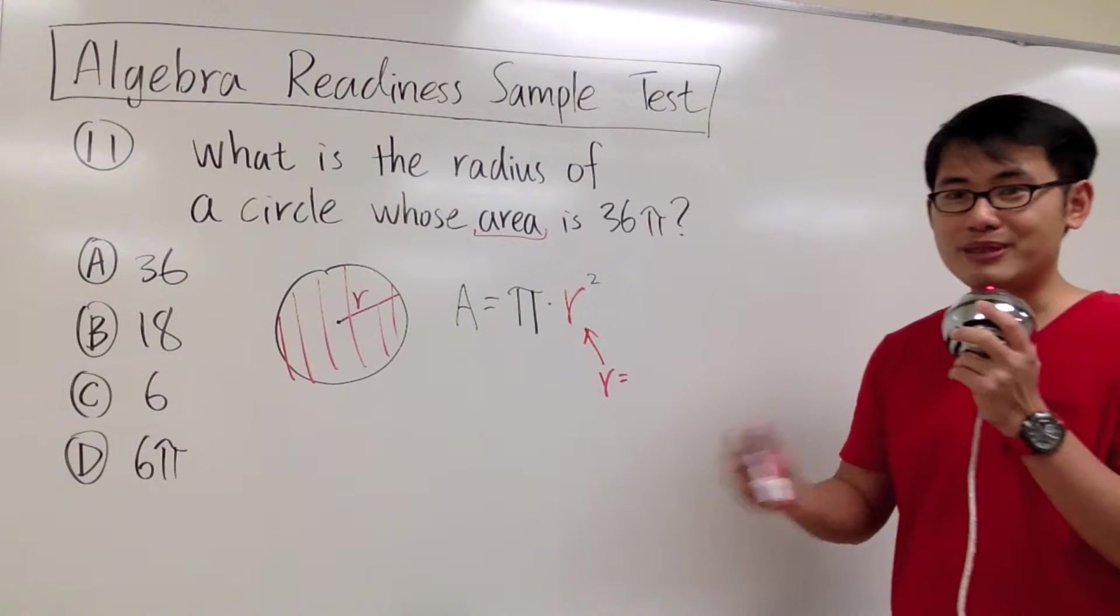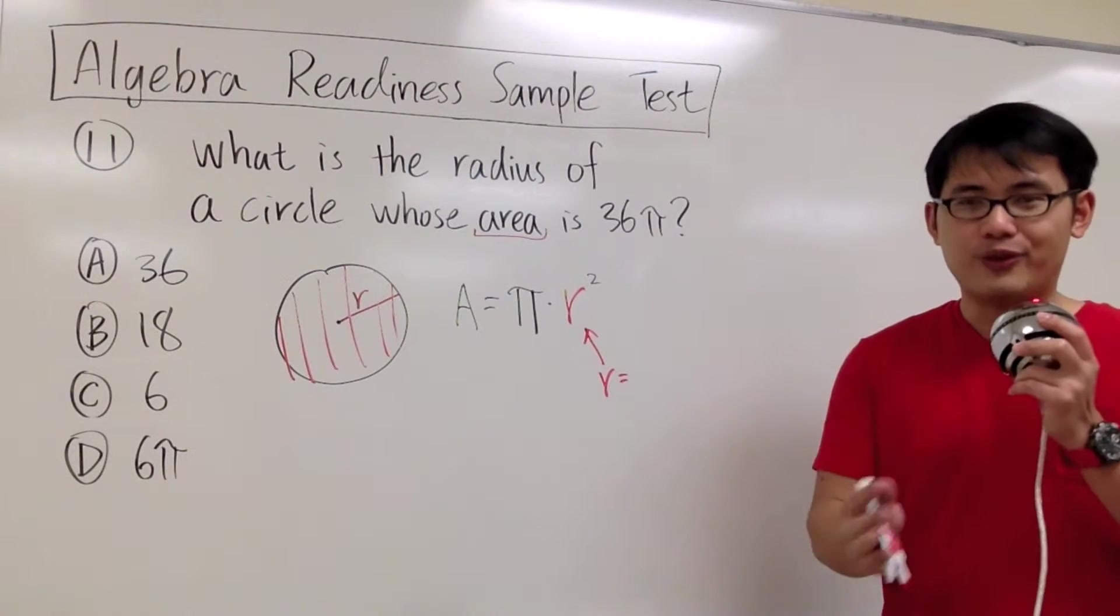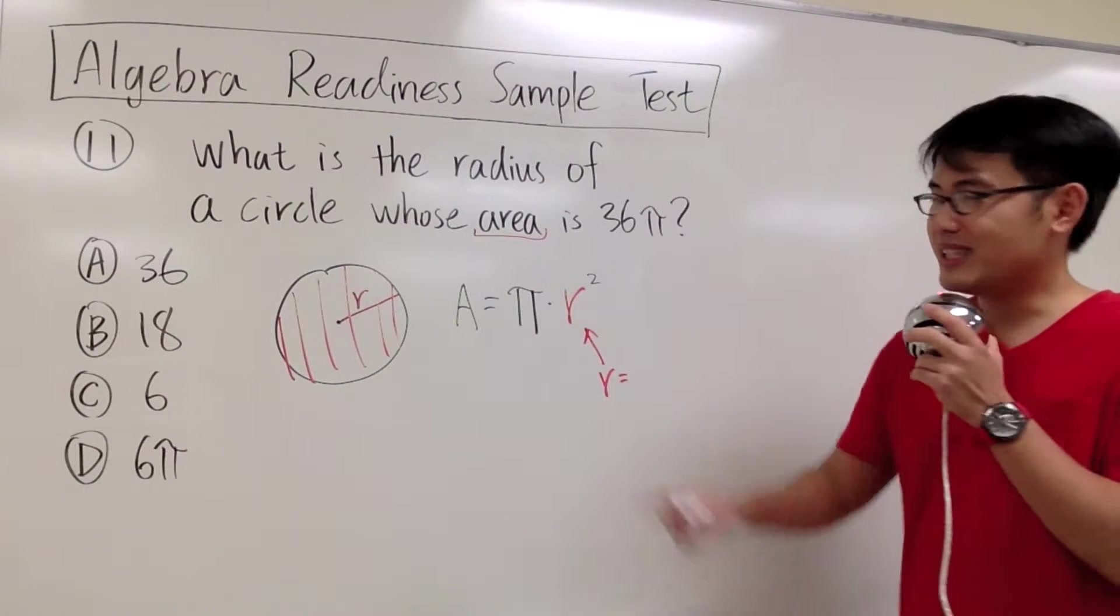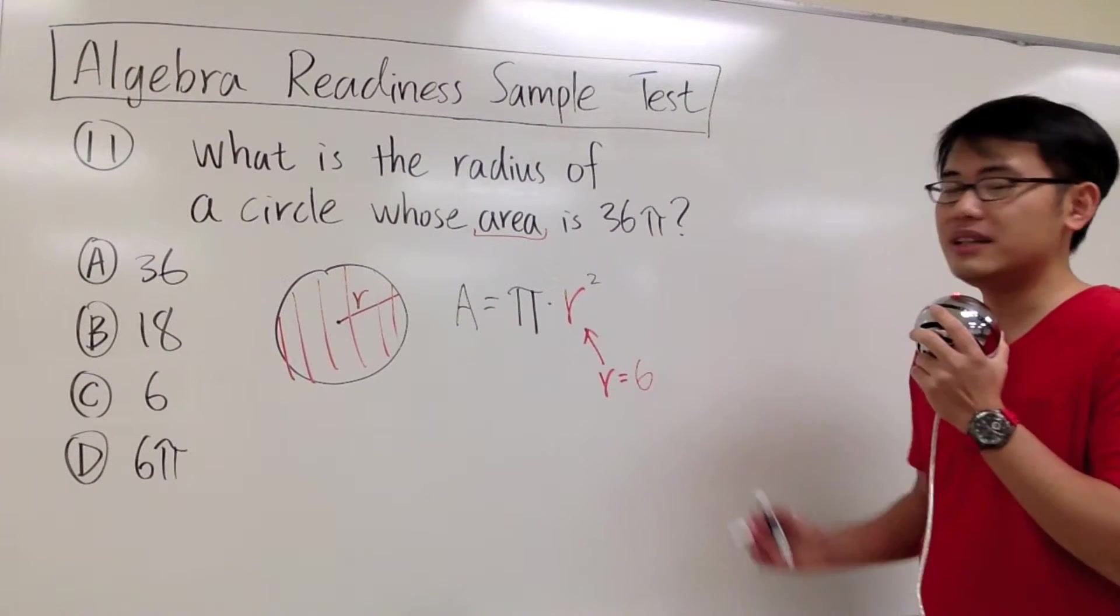I'm not going to use 2 times 18, because those two numbers have to be the same, 2 is of course different than 18. We know that 6 times 6 will give us 36. And that's exactly the radius that we need in this case.